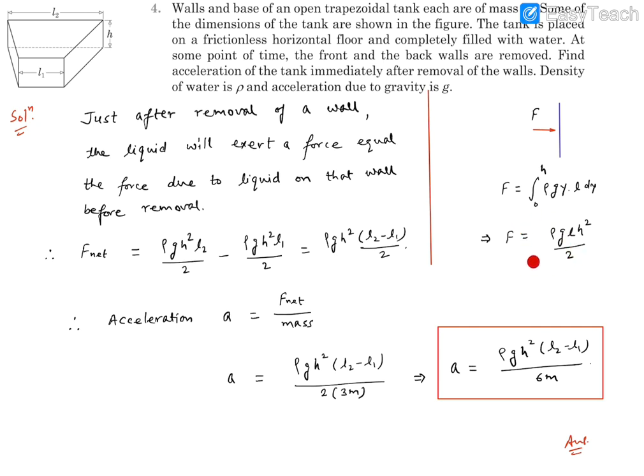Now, this is going to be a force expression. And if we are talking about this front wall, then this L will become L1. If we are talking about this rear wall, then L becomes L2. So how much the net force is going to be? The net force is going to be the difference of the two. Higher value is going to be with L2. So we can write the net force is going to be rho g H square by 2 into L2 minus rho g H square by 2 into L1. So that is the net force that is going to act on this tank just after removal of these two walls, which turn out to be rho g H square by 2 in bracket L2 minus L1.